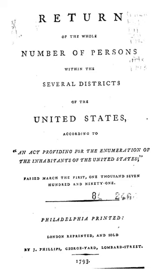The 1980 Census added several options to the race question, including Vietnamese, Indian, Guamanian, Samoan, and re-added Aleut. The term 'color' was again removed from the racial question, and the following questions were asked of a sample of respondents.